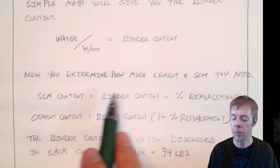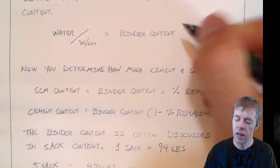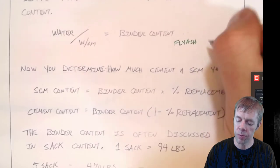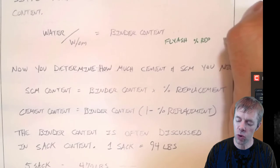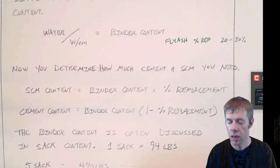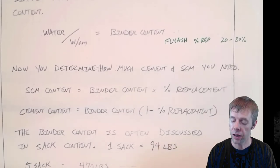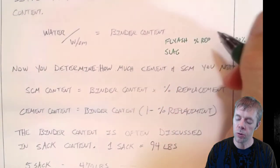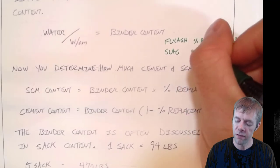Now you determine how much cement and SCM you need. You'll often see sometimes that things like fly ash are used at a percent replacement level of about maybe twenty to thirty percent. And you'll see things like slag, which will be used at a percent replacement level up to about fifty percent.